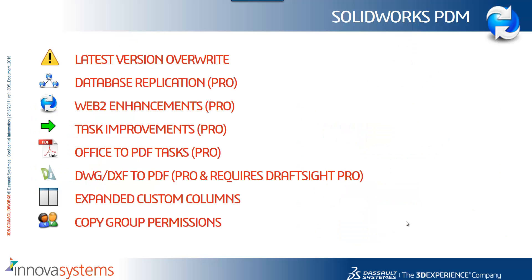In terms of the updates for 2017, we now have the ability to perform a latest version overwrite. Historically, versions would be incremented every time a document was checked into the vault. We now get the choice, if permissions are enabled, to override the latest revision, keeping the number of versions to a minimum. Database replication has been improved in the professional version and there have been some enhancements to Web 2 as well.